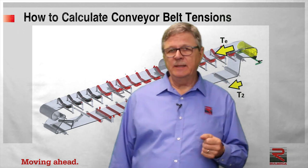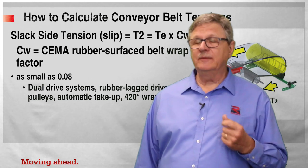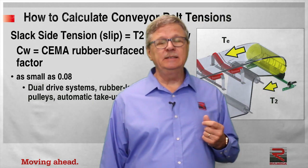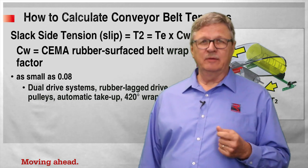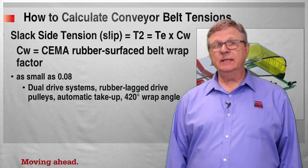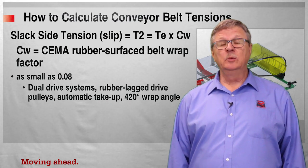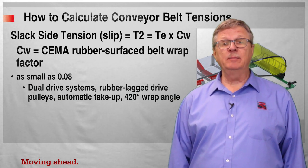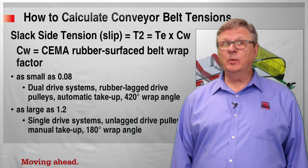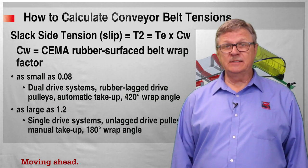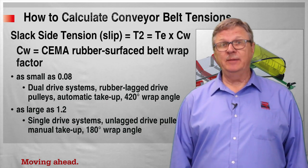The historical method that CEMA provides to calculate T2 to resist slip is TE times CW, where CW is the CEMA wrap factor for a rubber surfaced belt. The wrap factor can be as small as 0.08 for dual drive systems with rubber lagged drive pulleys, automatic take-up, and 420 degrees of wrap angle, or as large as 1.2 for a single drive system with an unlagged pulley, manual take-up, and 180 degrees of belt wrap.